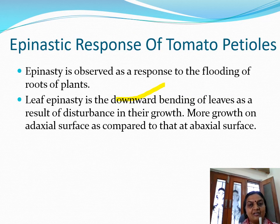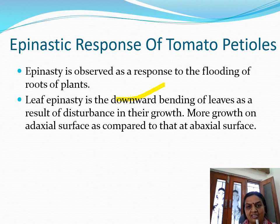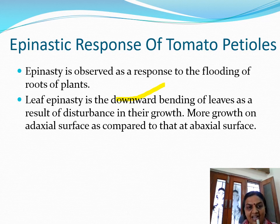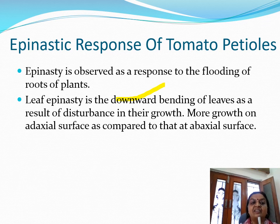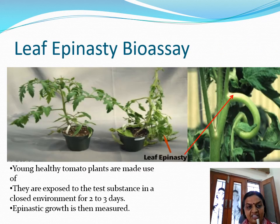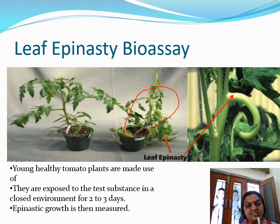The second bioassay for ethylene is the epinastic response of tomato petioles. Epinasty is generally observed in plants in response to flooding of roots, because as discussed, ethylene has a role under stress conditions. In a flooded plant, the leaves bend downward, exhibiting epinastic movement because of more growth on the adaxial surface compared to the abaxial surface. Here, this is a healthy tomato plant, and when exposed to ethylene, it exhibits drooping-down leaf epinasty.